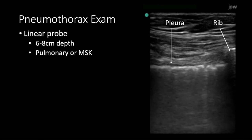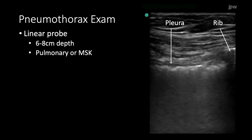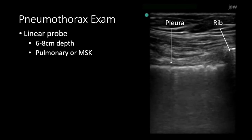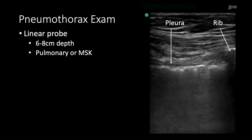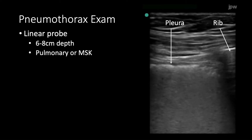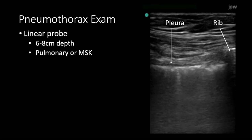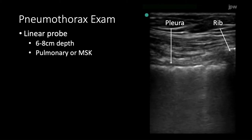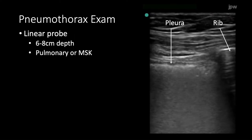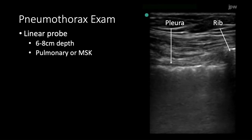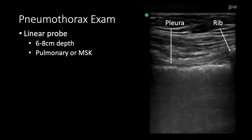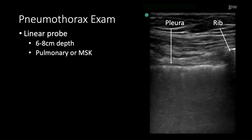For our fourth and final pathology, we'll go over the pneumothorax exam. This exam is a little different — we're going to switch to the linear probe. The linear probe has great resolution within six to eight centimeters of the probe, and since we're interested in the pleura, which is a very superficial structure, it will allow us to investigate the pleura closely with good definition. Switch the probe to a pulmonary or musculoskeletal exam mode, and play around to see which mode brings out the pleural line most clearly for your machine.